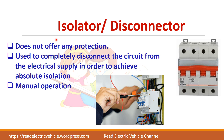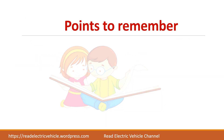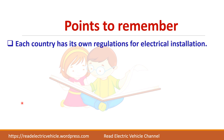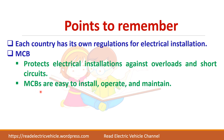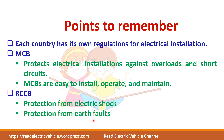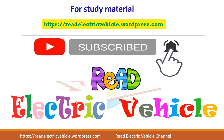In this video, we have seen about the MCB, RCCB, and isolator, but there are many more parts to be discussed in the next video. Key points to remember: each country has its own regulations; MCBs protect electrical installations against overload and short circuit and are easy to install, operate, and maintain; and RCCBs protect us from electrical shock and earth faults. If you like the video, do subscribe to the Reed Electric Vehicle channel.